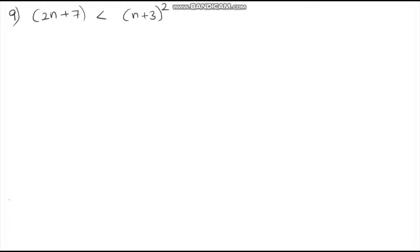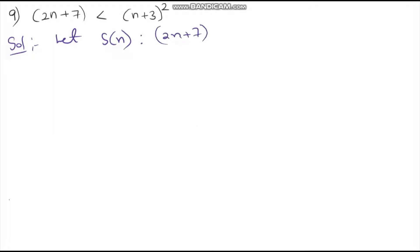Problem 9: Prove that 2n plus 7 is less than (n plus 3) whole square. The solution: let S of n be the given statement, where S of n is: 2n plus 7 is less than (n plus 3) whole square.